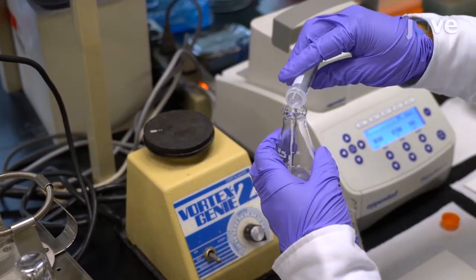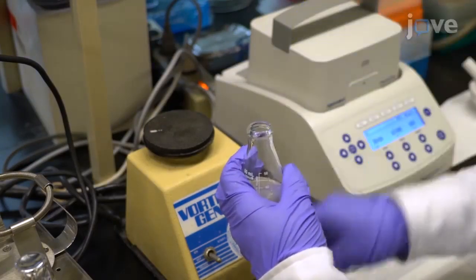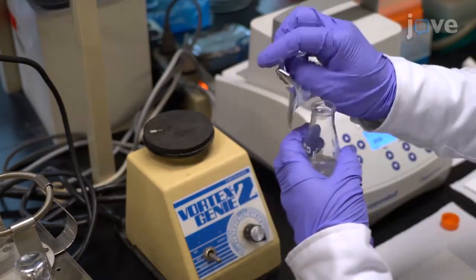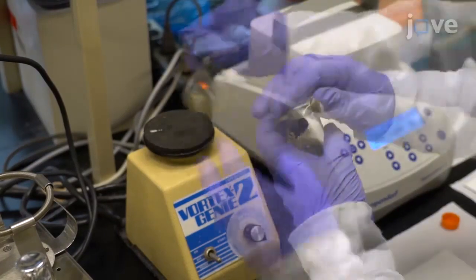To begin, add 10 milliliters of acetone to the lyophilized cells and seal the flask before mixing with a vortex mixer for 30 seconds.